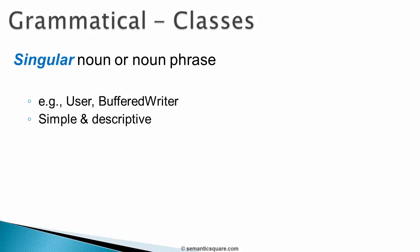Now let's look at grammatical aspects of naming. For classes, use a singular noun or noun phrase — so use 'User' instead of the plural 'Users.' Similarly, BufferedWriter is a noun phrase and this class is part of the java.io package. Also, try to keep class names simple and descriptive; the name should tell us what the class does.